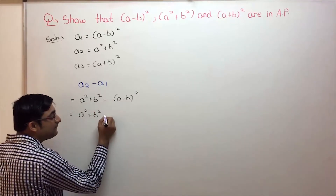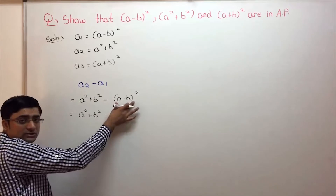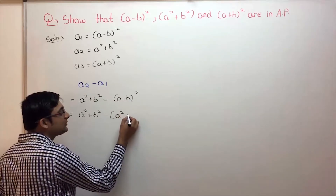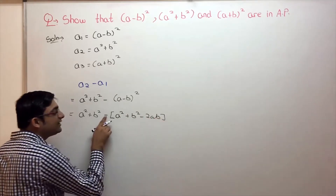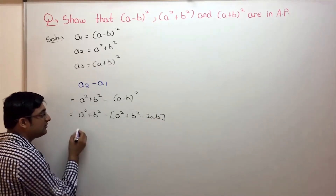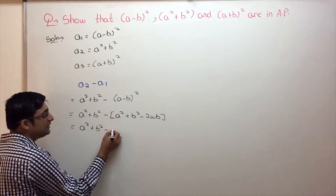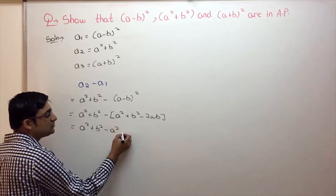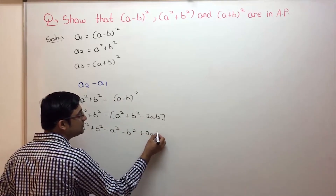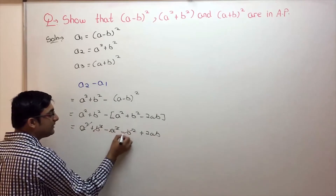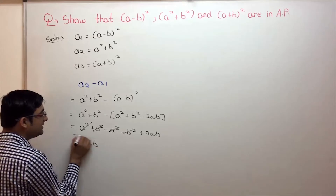Now, a very common mistake is not paying attention to the minus sign. Expanding (a - b)² gives a² + b² - 2ab. So we have: a² + b² minus (a² + b² - 2ab). Distributing the minus: a² - a² cancels, b² - b² cancels, leaving us with +2ab. So a2 minus a1 equals 2ab.